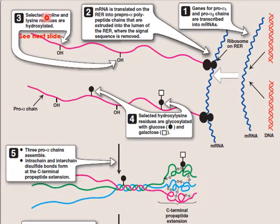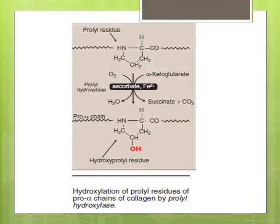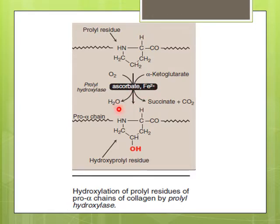Selected proline and lysine residues of the pro-alpha chain are hydroxylated. Proline is hydroxylated to hydroxyproline with the help of prolyl hydroxylase enzyme; oxygen is used, and alpha-ketoglutarate, ascorbate (vitamin C), and iron are used as cofactors, while water, succinate, and carbon dioxide are also formed. To hydroxylate lysine residues into hydroxylysine, lysyl hydroxylase enzyme is used instead.